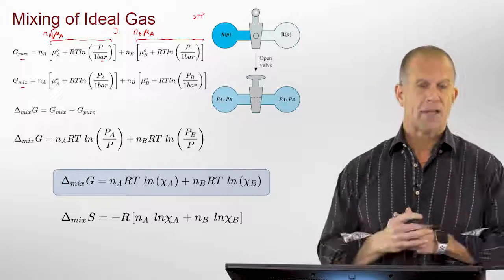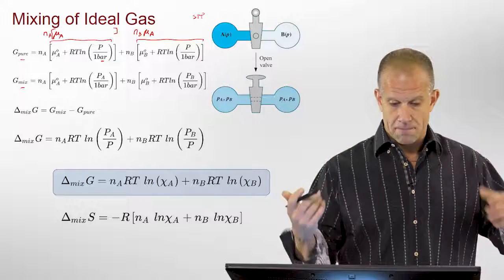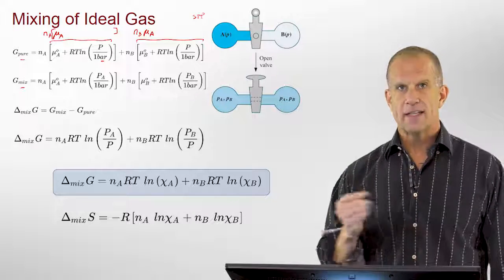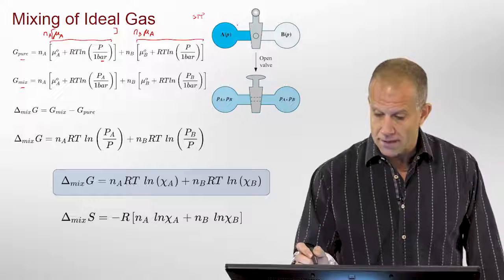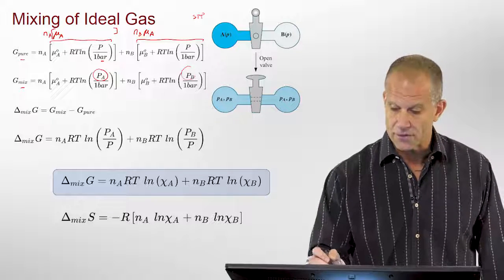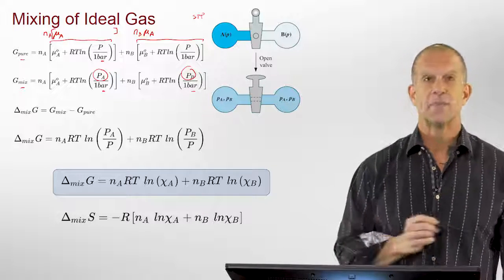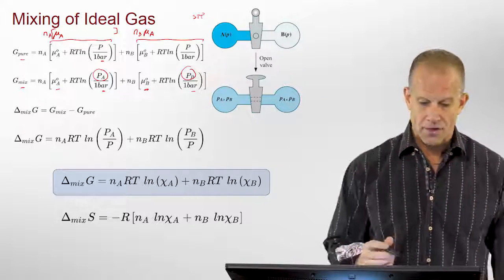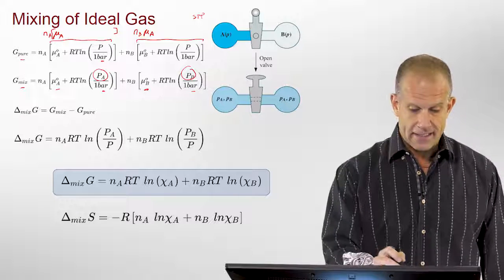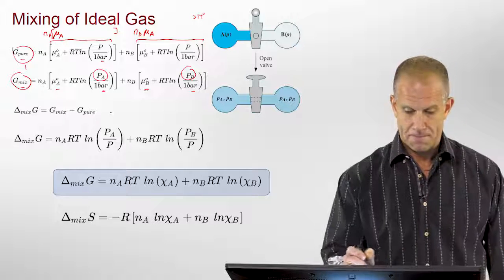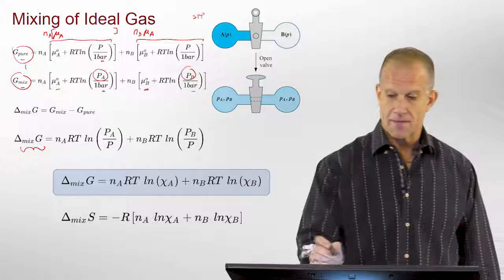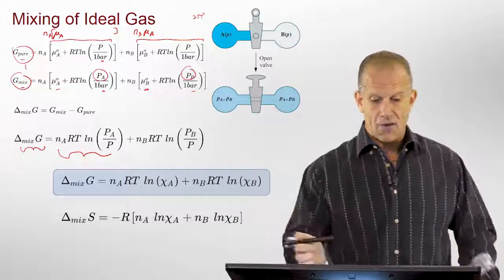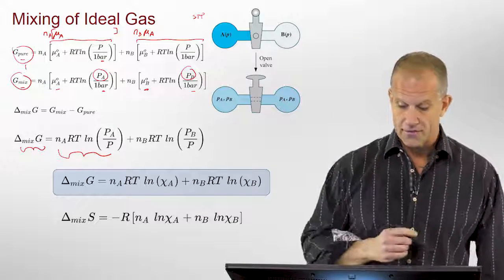Now we would write the same expression for the mixed state, expressing each one of these individually, except now it's mixed, so now it's not the total pressure of each of those individual ones, it's the partial pressure of each one, still to the same standard state here and here. Now we can take these two terms, and the delta G of mixing is just this one minus this one. If you do this, you'll see that you get this expression out, where it's now the partial pressure over the total pressure of each one of those.